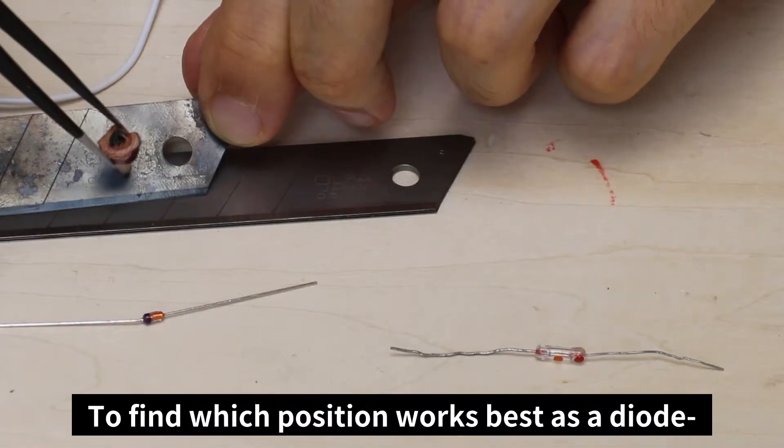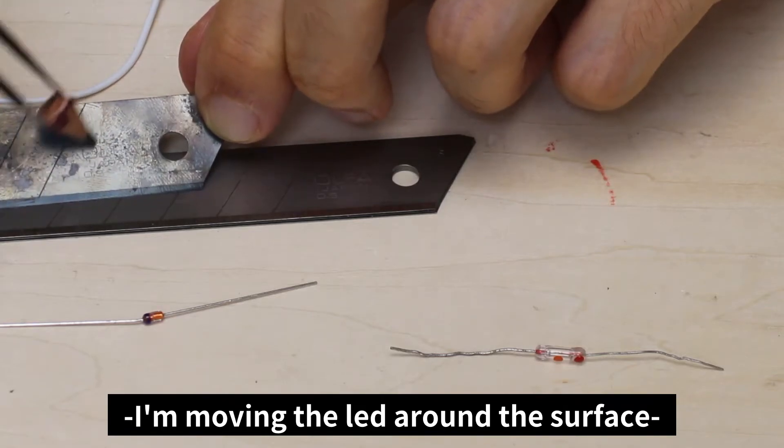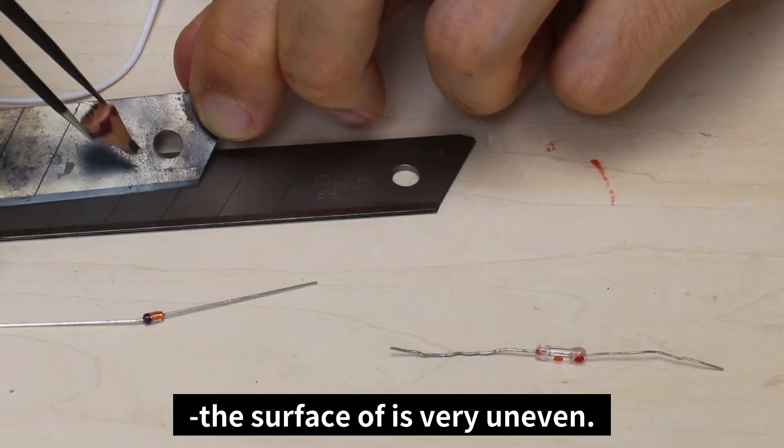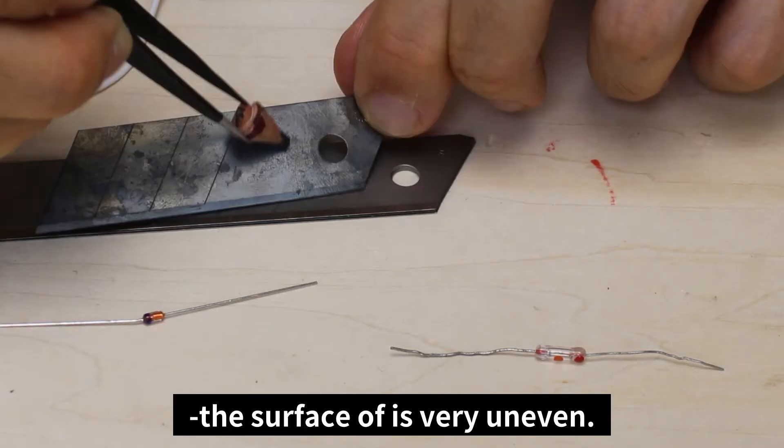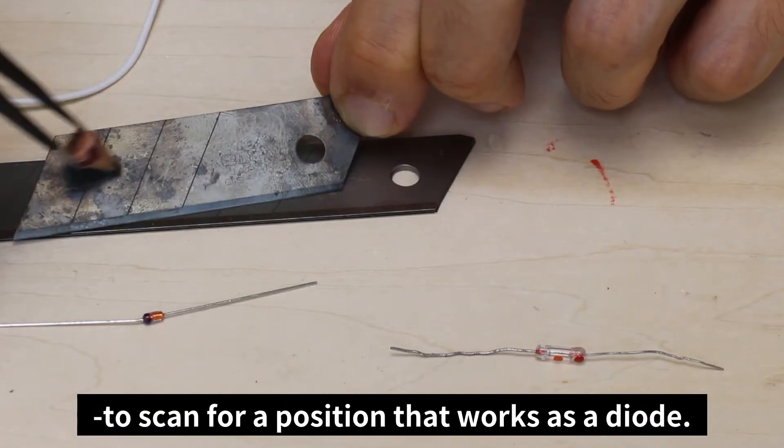To find which position works best as a diode, I'm moving the lead around the surface, because unlike a diode created in a clean room, the surface is very uneven. This is why it's necessary to scan for a position that works as a diode.